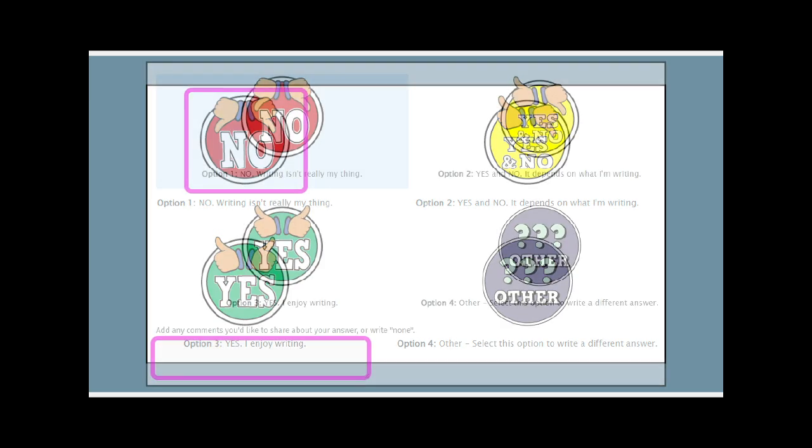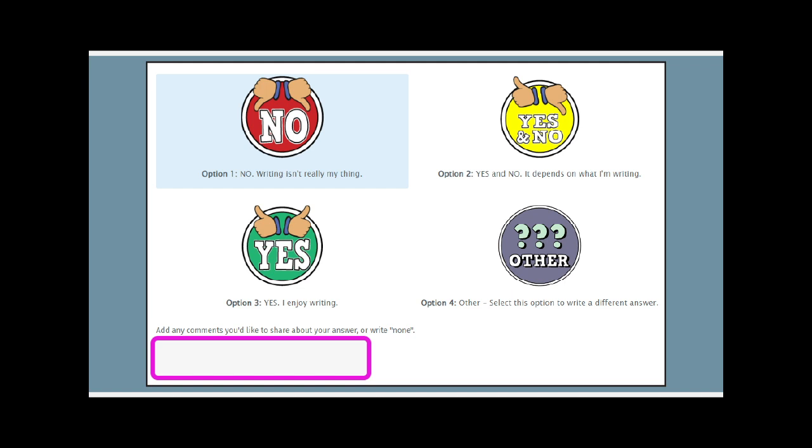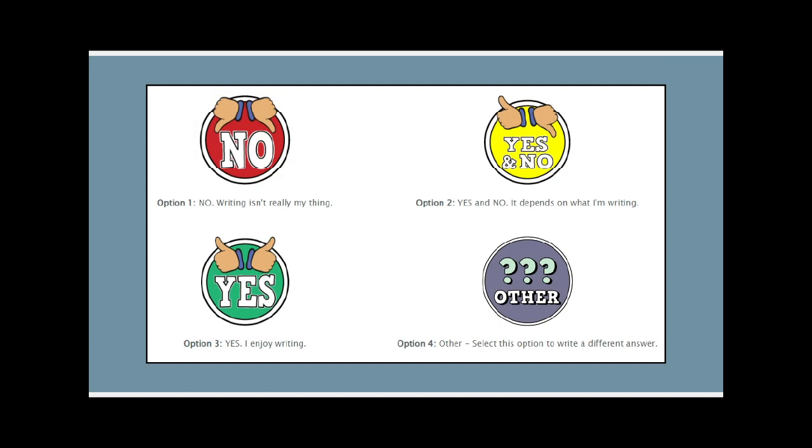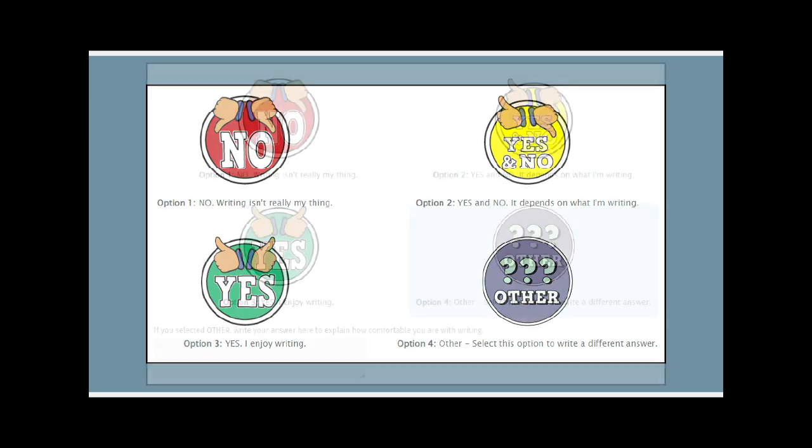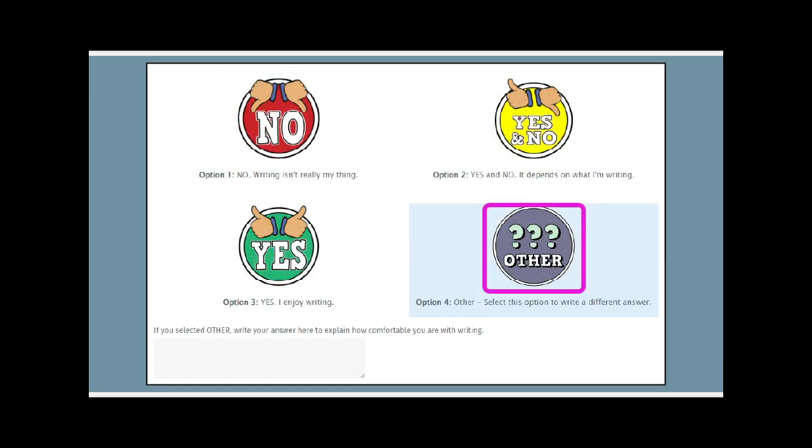Once you've made your selection, a dialog box will open so you can add comments or additional information about your response. If you have nothing else to share, make a check or type none. If you want to share a different answer, select the fourth option, other, and write your response in the box when it opens.